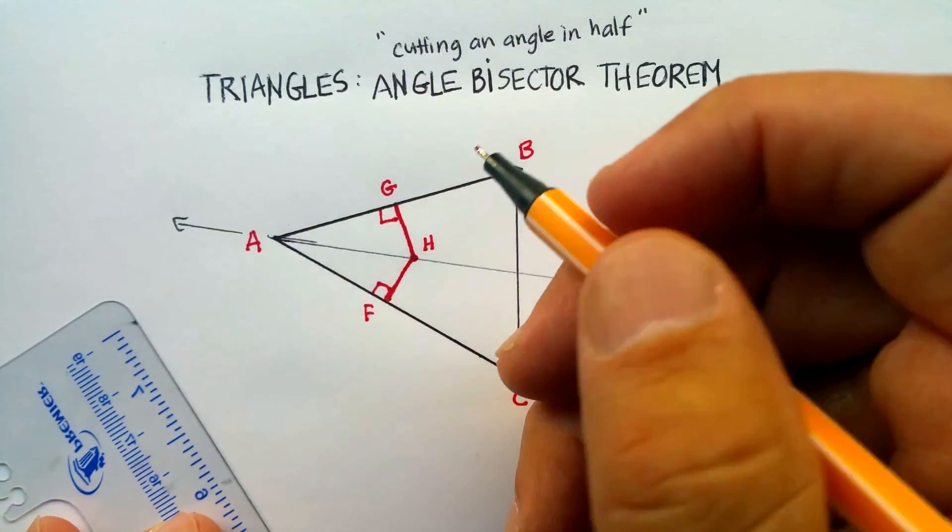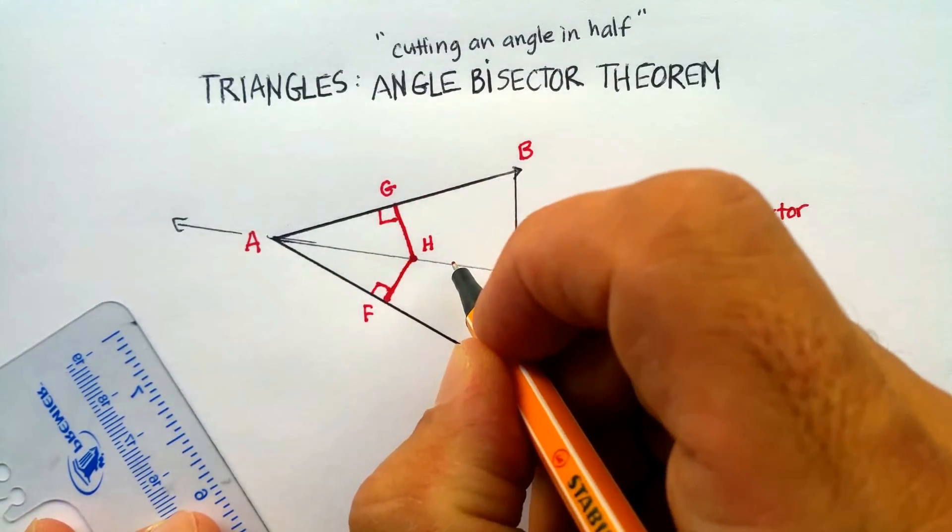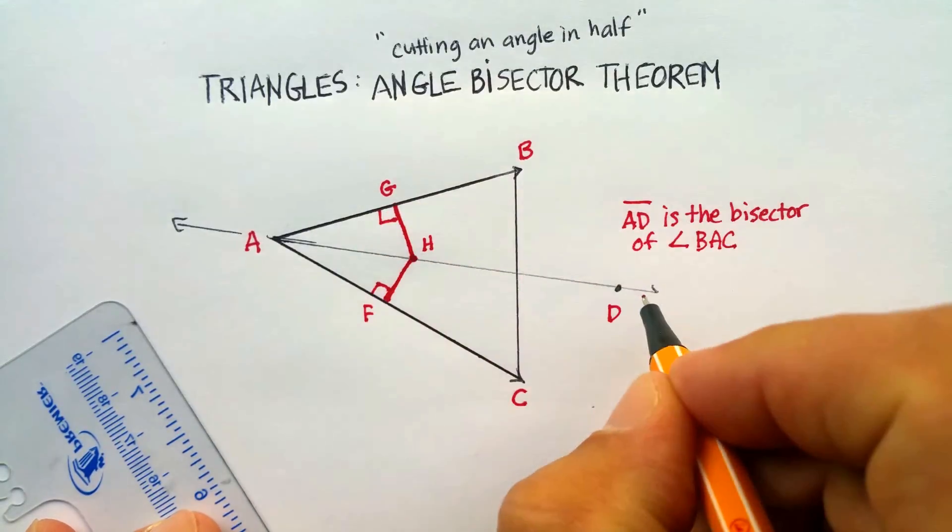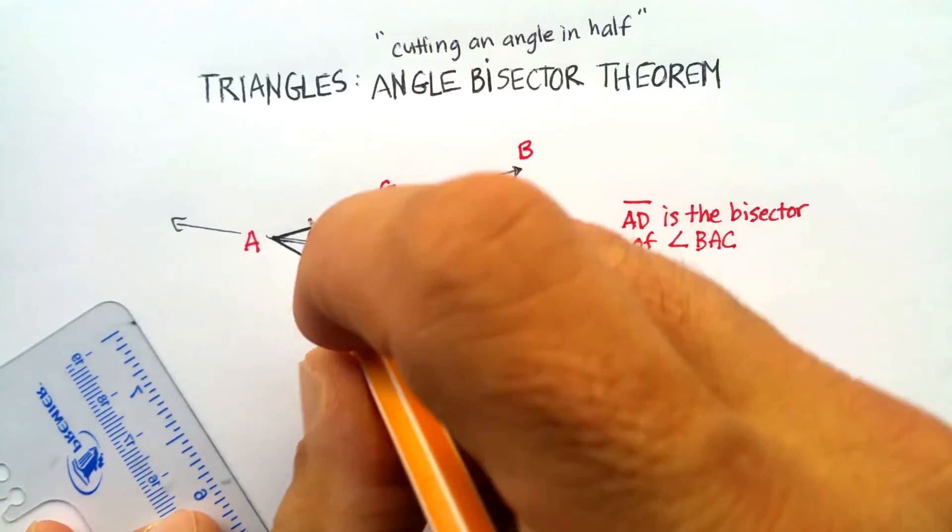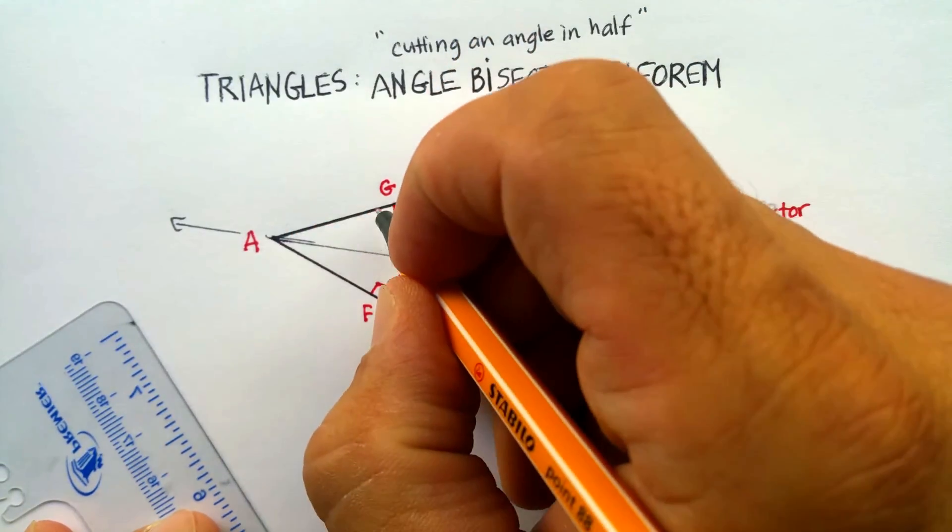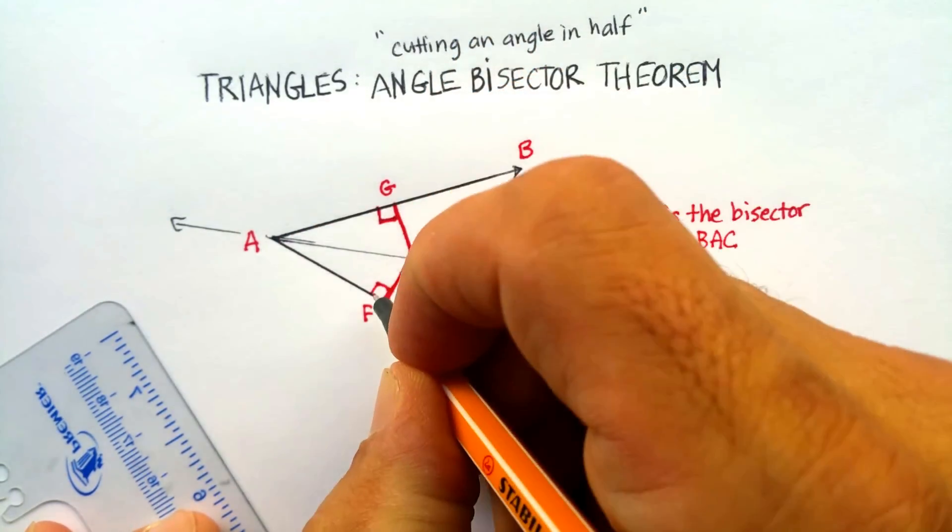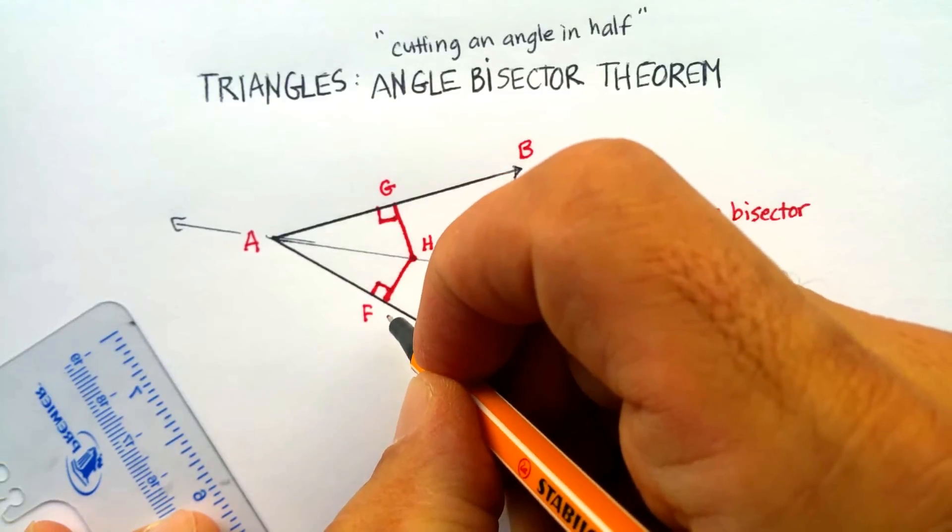So let me say that one more time. If I choose any point on this line, on this angle bisector, and I want to get to the closest point on the side, it will form a perpendicular, or a right angle.